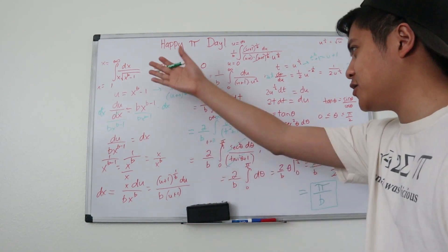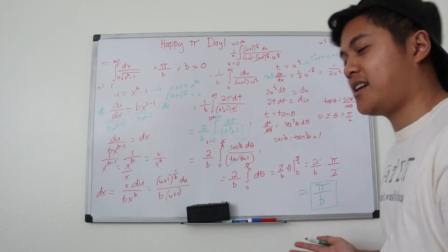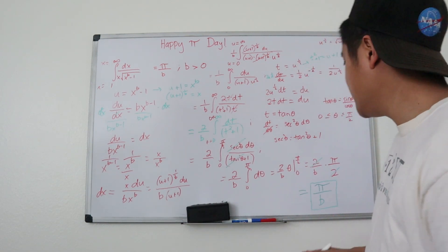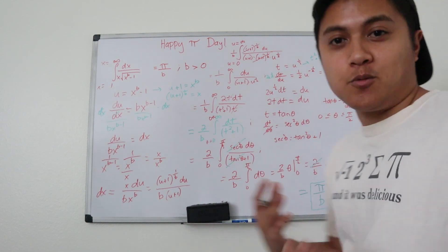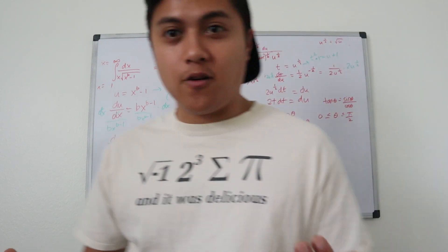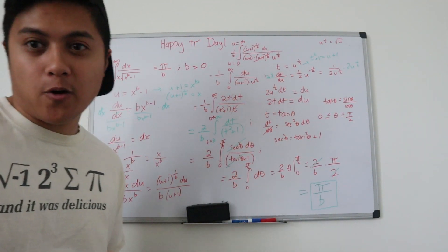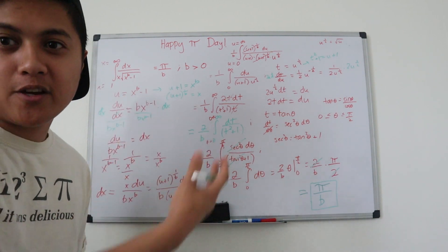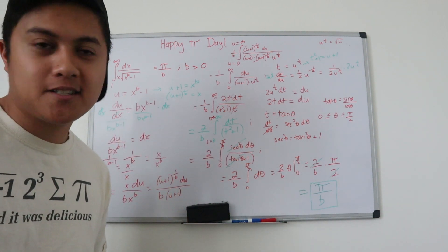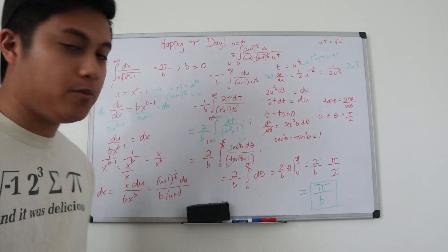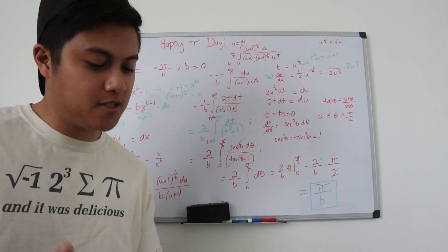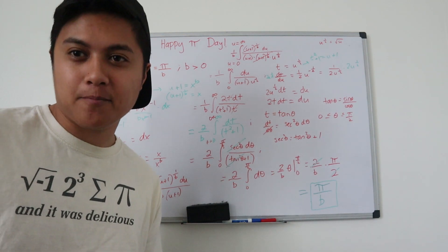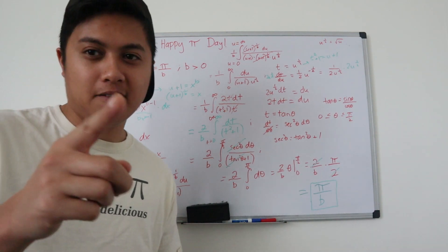So there it is, folks: pi over b. This long, arduous integral ends up being exactly what I told you. But aren't you glad you know how to do it now? Thank you for watching — I hope it was clear enough and you could follow the derivation. I hope you all have a wonderful Pi Day. I need some delicious pi. Until next time!